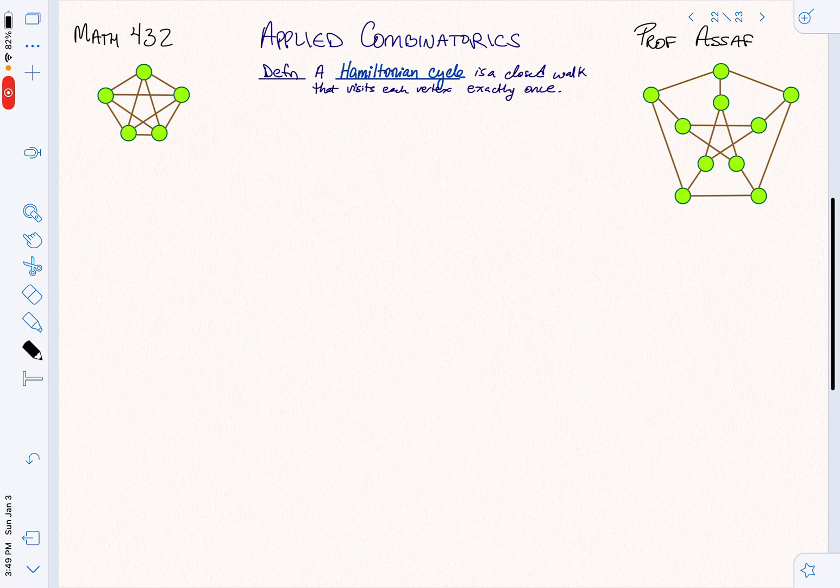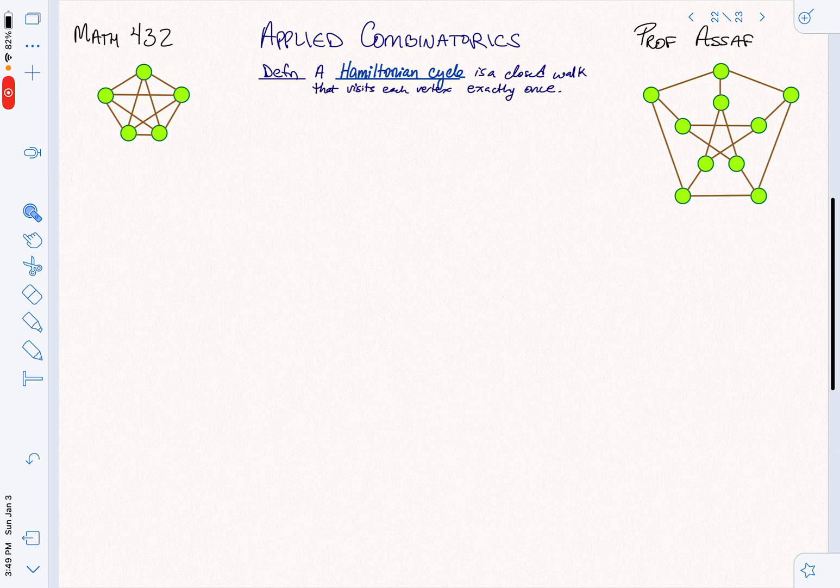Now that we've introduced the idea of a Hamiltonian cycle, let's look at it rigorously. What is a Hamiltonian cycle? It is a closed walk, that means my beginning will be my end, that visits each vertex exactly once. So that means I'm going to come back to where I started, having visited each vertex exactly once.